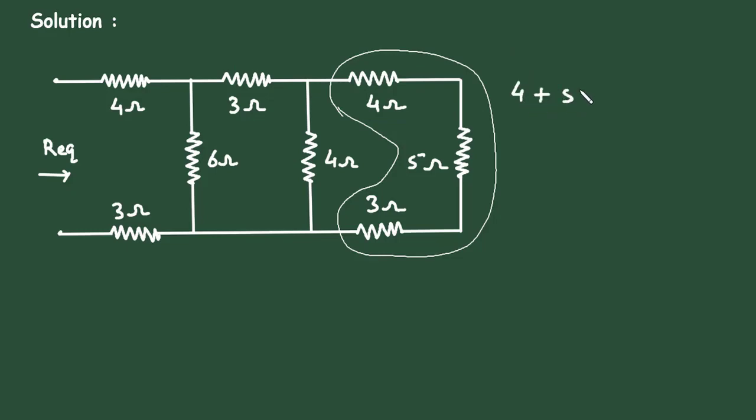So 4 plus 5 plus 3, this will be 12 ohm. Therefore its equivalent resistance will be 12 ohm.